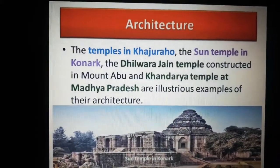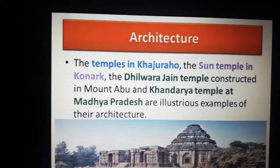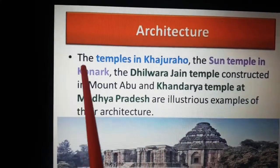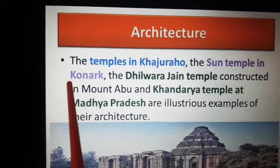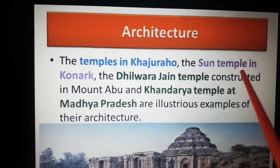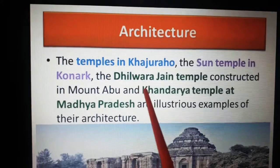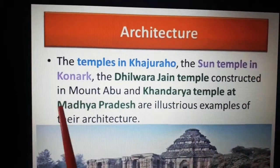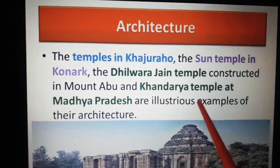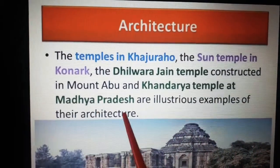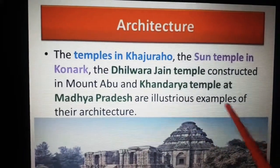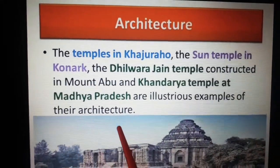Next we will see their temple architecture. Some famous temple architectures from the Rajput period are: the temples in Khajuraho, the Sun Temple in Konark, the Dilwara Jain Temple constructed in Mount Abu, and the Gondwana Temple in Madhya Pradesh — these are illustrious, famous examples of their architecture.